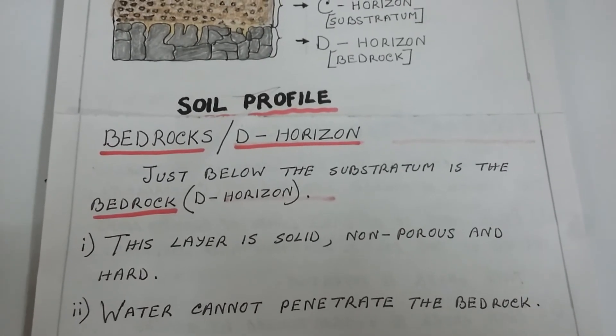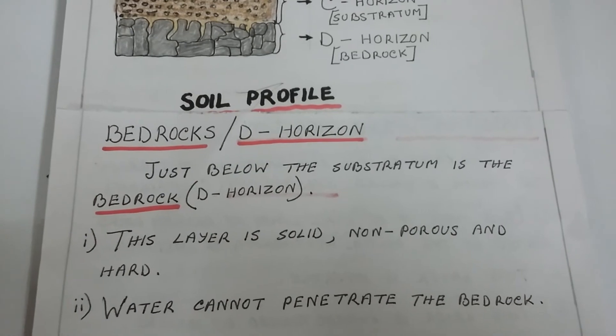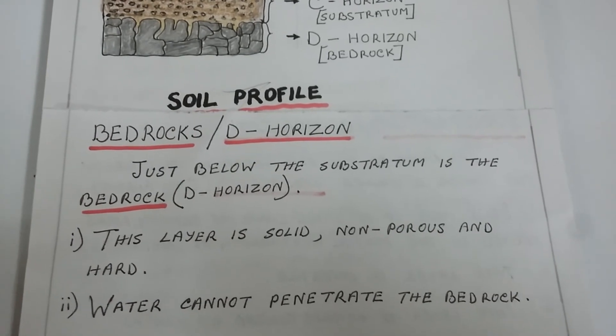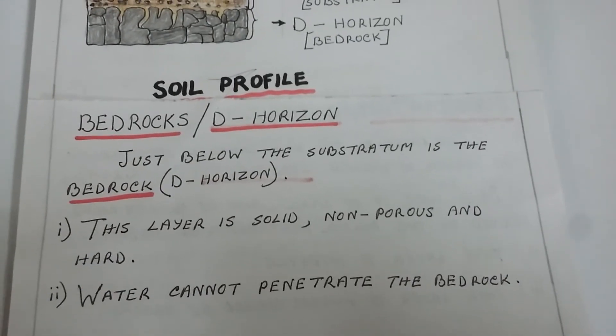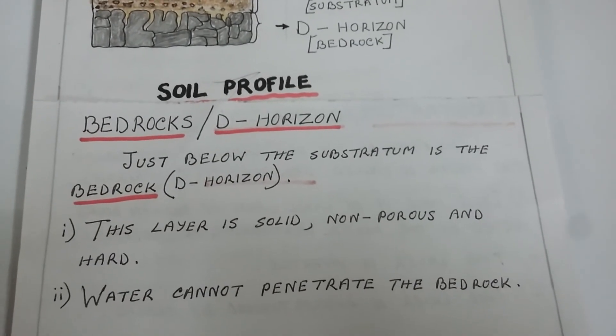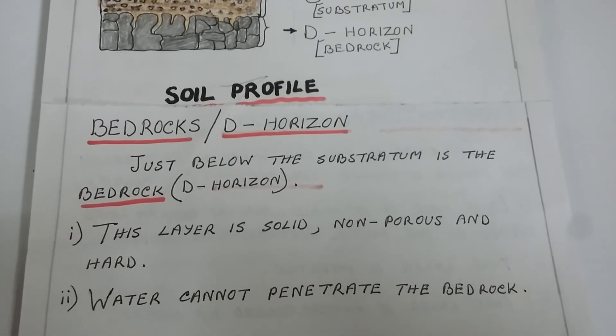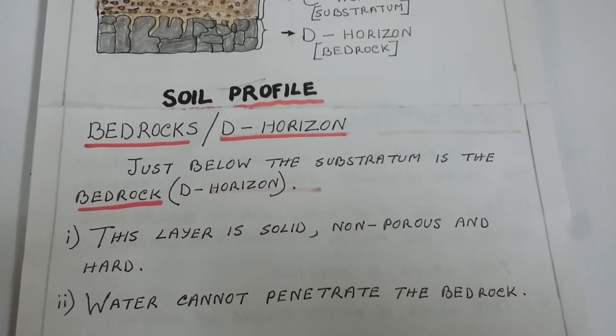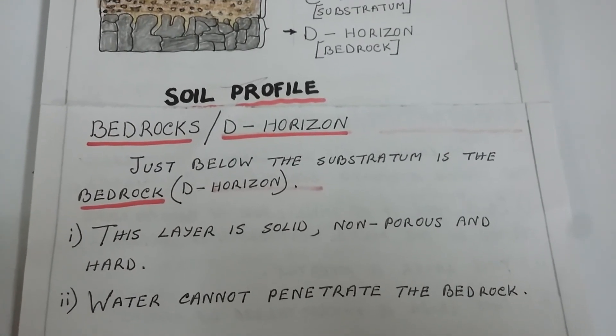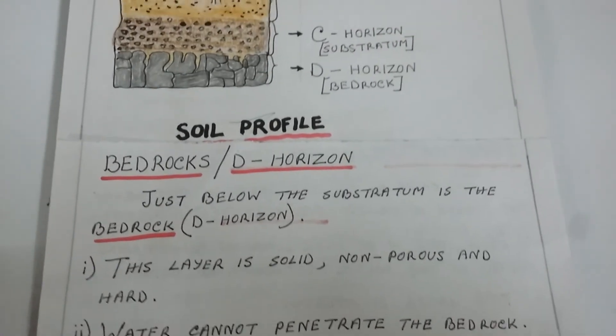When there is sufficient rain, the ground water level rises, whereas during drought, the ground water level falls.